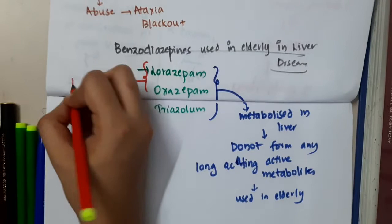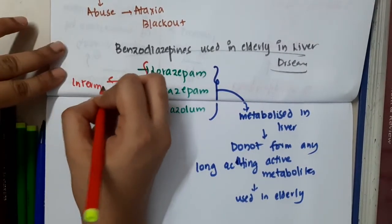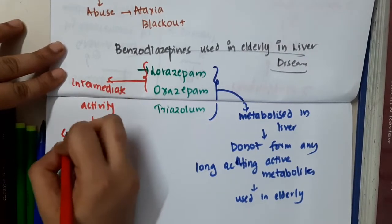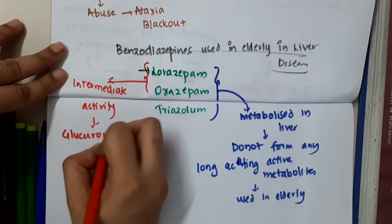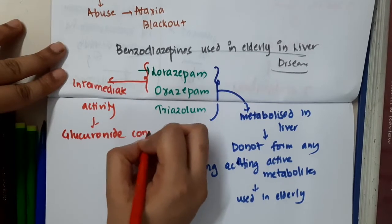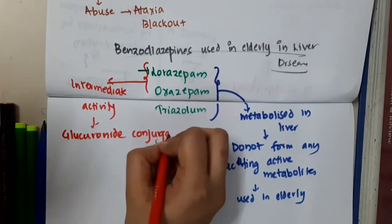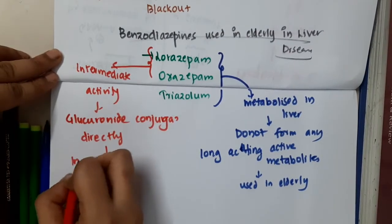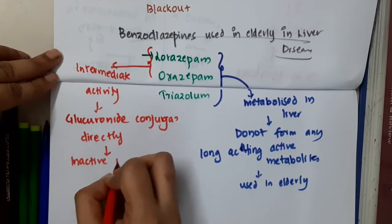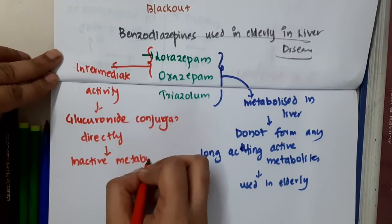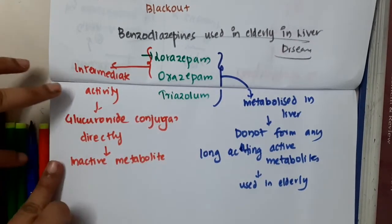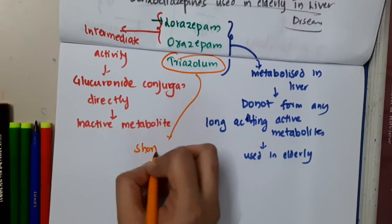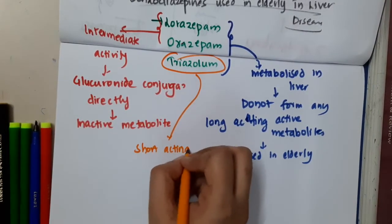Lorazepam and oxazepam both have intermediate activity. They undergo glucuronide conjugation directly, which results in the formation of inactive metabolites. This is the key reason why lorazepam and oxazepam are considered safe in elderly and liver disease patients.